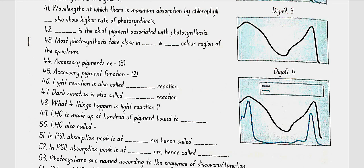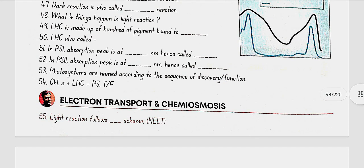The LHC (light-harvesting complex) is made of hundreds of pigments bound to proteins, and is also called the antenna. In PS1, the absorption peak is at 700 nm, hence called P700. In PS2, the absorption peak is at 680 nm, hence called P680. Photosystems are named according to the sequence of discovery.